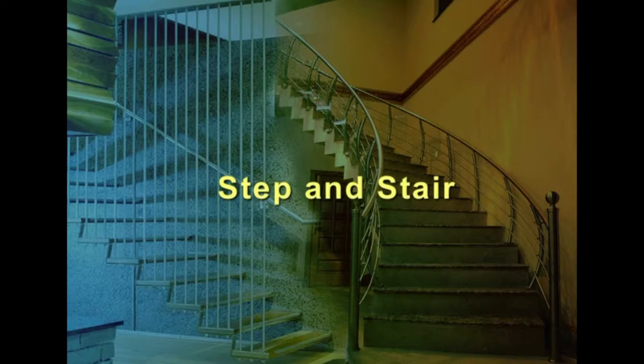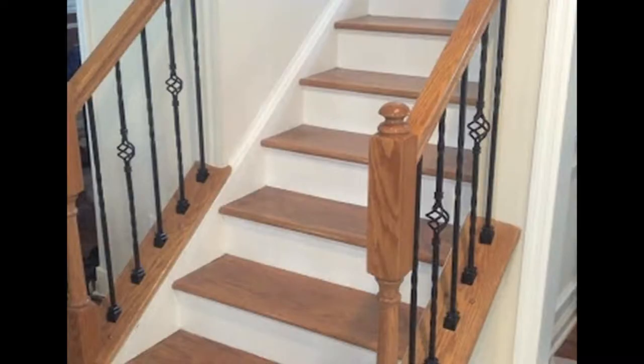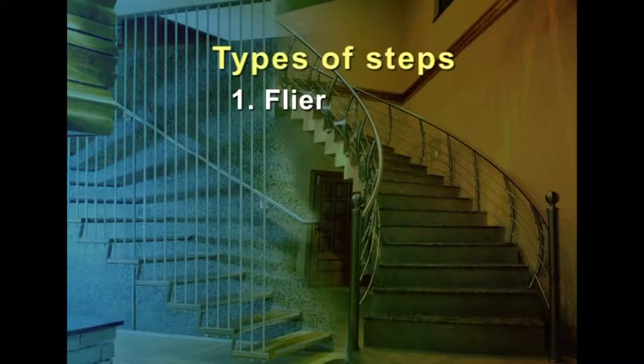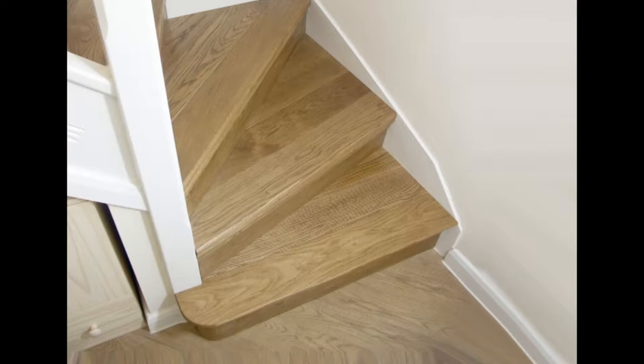A step is a combination of tread and riser and permits a person to ascend or descend from floor to floor. Types of steps: a flier is an ordinary step of uniform width and rectangular shape in plan. A bull-nose step is generally provided at the bottom of the flight and projects in front of the newel post; its end near the newel forms the quadrant of a circle.